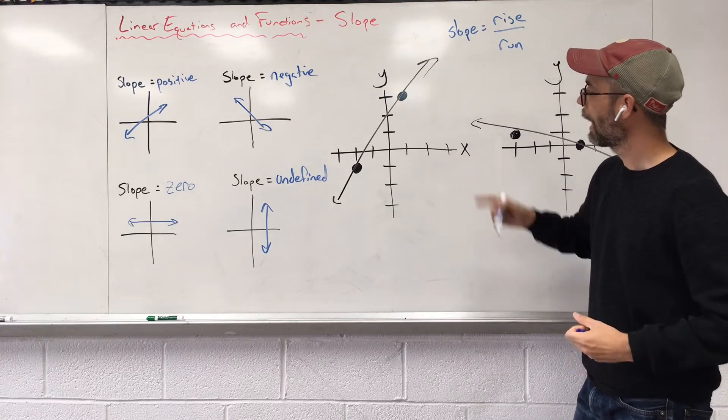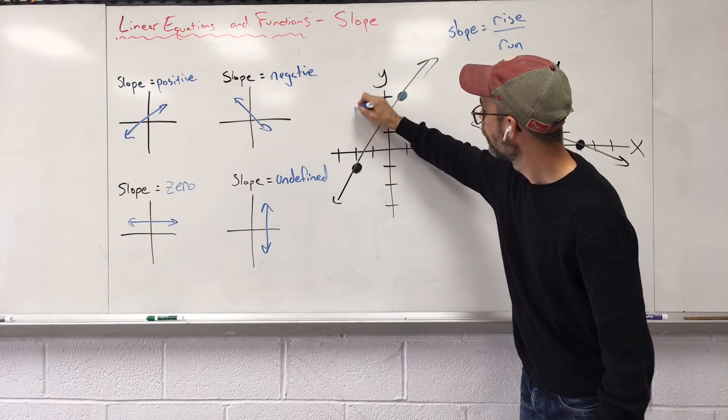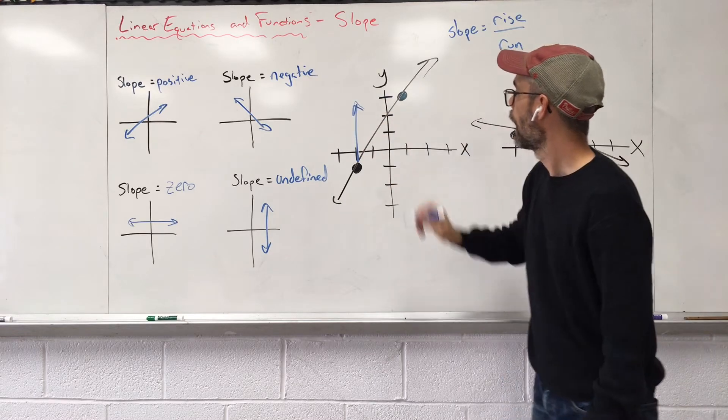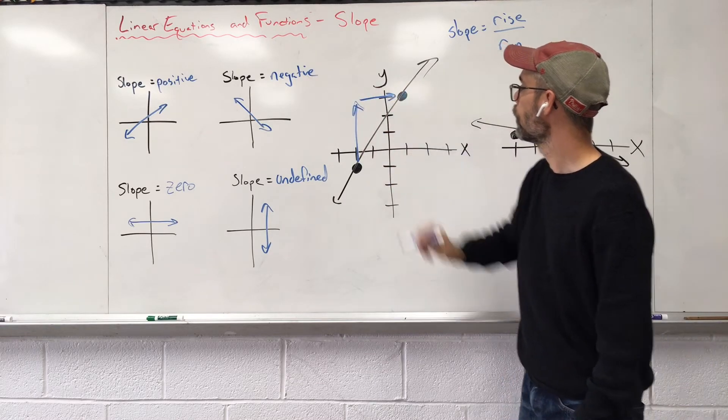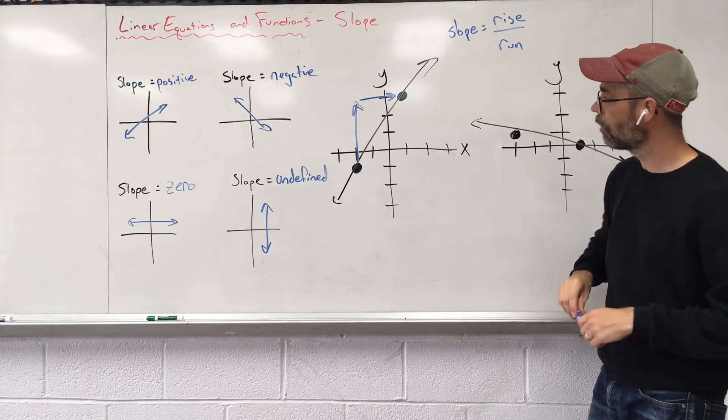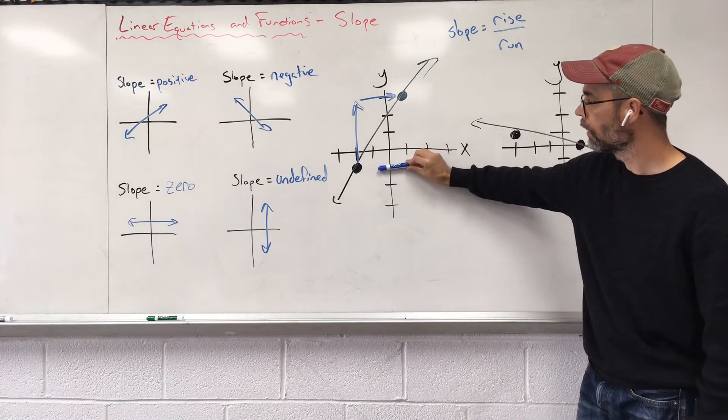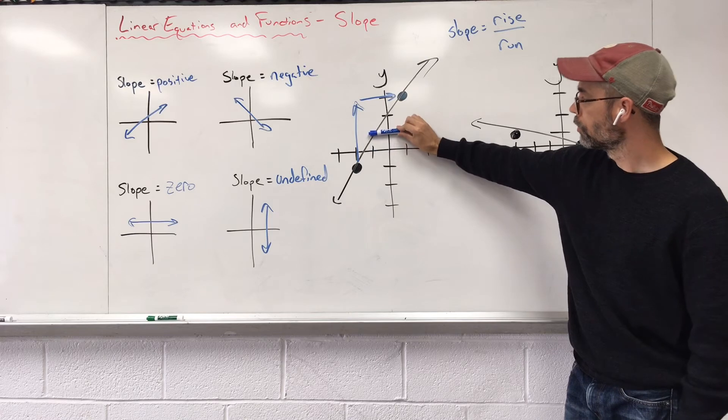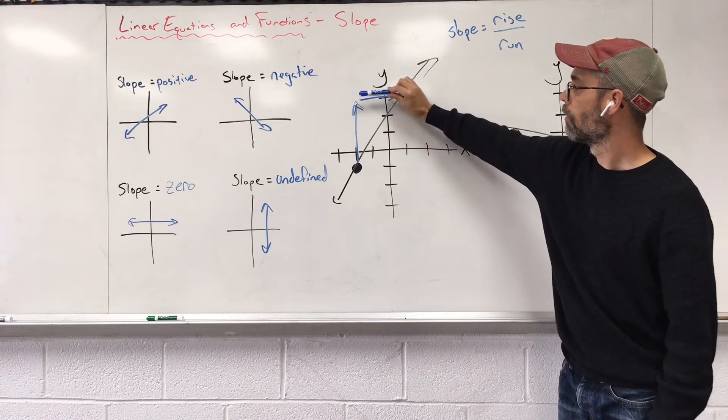I want to find how far up we go. I want to find out how far over we go. Let's count our rising. We start here. We have one full step, two, three, four. We just rose four spots.